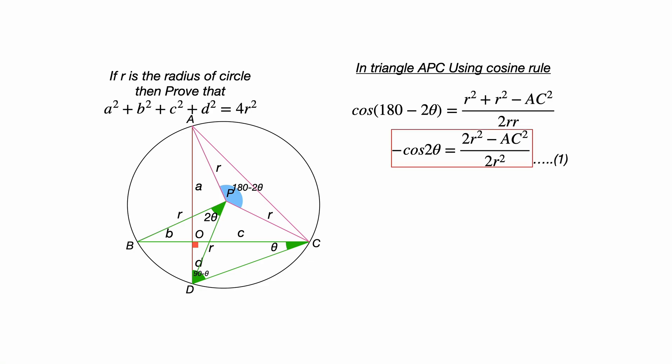Similarly, now join B to D. If we join B to D and we consider the triangle BPD, we would be getting, using cosine rule, cos(2θ) = (r² + r² - BD²) / (2rr). That will be giving you (2r² - BD²) / 2r². Let's put that equation number 2.